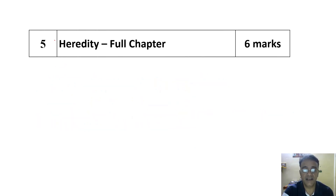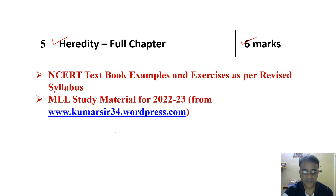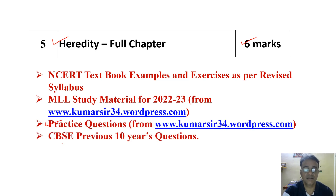Then Heredity and Evolution — the chapter is there but the evolution part has been deleted from the syllabus. So it is also a relatively small chapter worth 6 marks. Complete NCERT textbook examples and exercises as per the revised syllabus, then the chapter from my minimum level study material, practice questions, and CBSE previous 10 years questions.